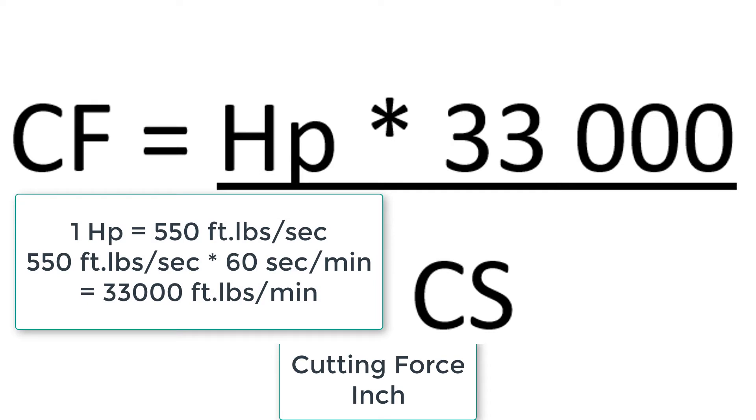As you recall, one horsepower equals 550 foot-pounds of force per second and there are 60 seconds in a minute. When we multiply 550 times 60 we get 33,000 foot-pounds per minute.